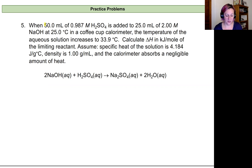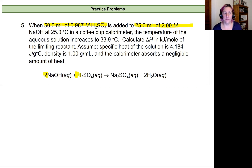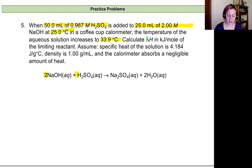In this problem, we're told that we have 50 milliliters of a 0.987 molar sulfuric acid solution that we're going to add to 25 milliliters of a 2.00 molar sodium hydroxide solution, all at 25 degrees Celsius in a coffee cup calorimeter. We're going to see an increase in temperature up to 33.9 degrees Celsius, and we need to calculate the enthalpy of this reaction in kilojoules per mole for the limiting reactant.